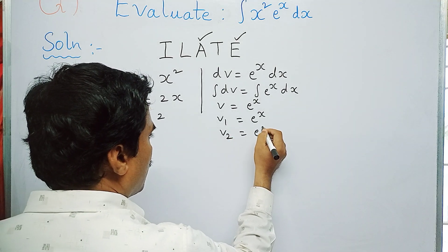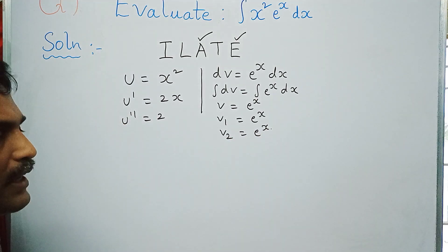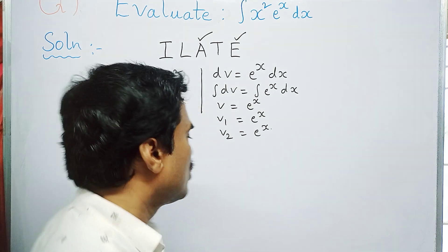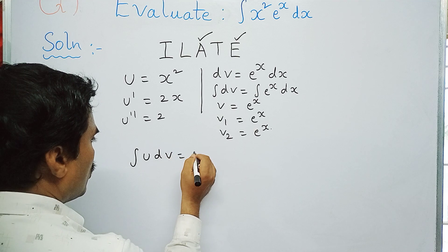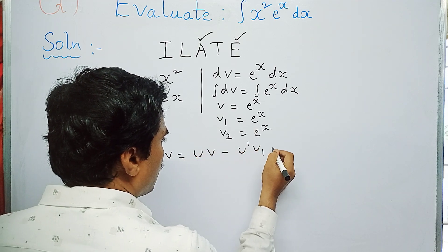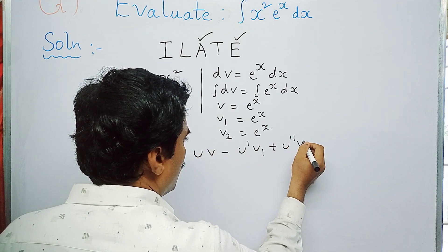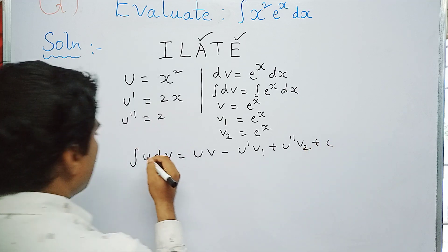Now we apply Bernoulli's formula. Bernoulli's formula is: integral u dv = u·v - u'·v1 + u''·v2 + c.